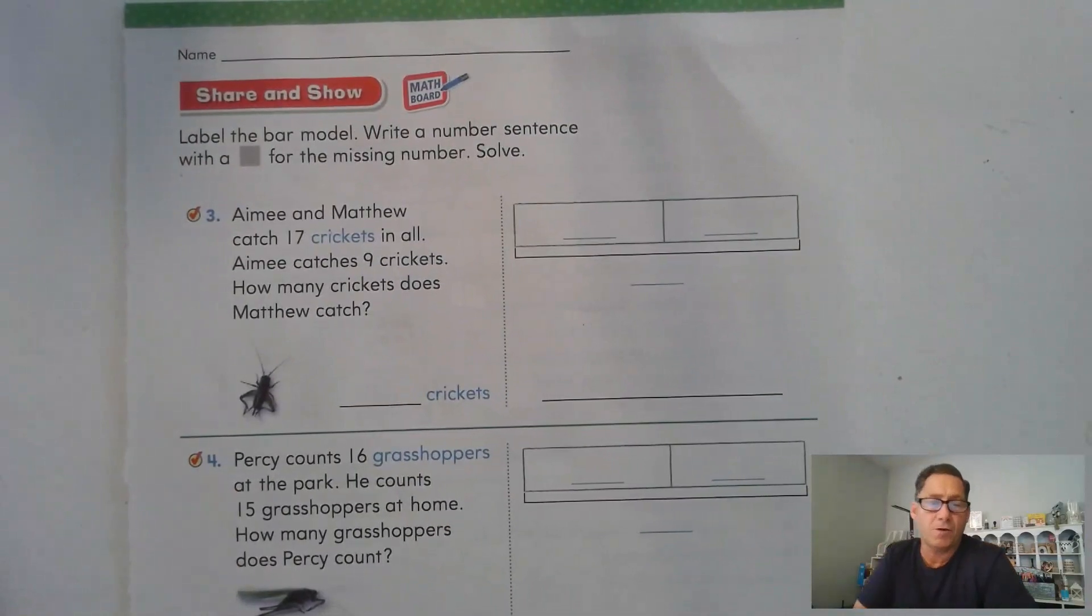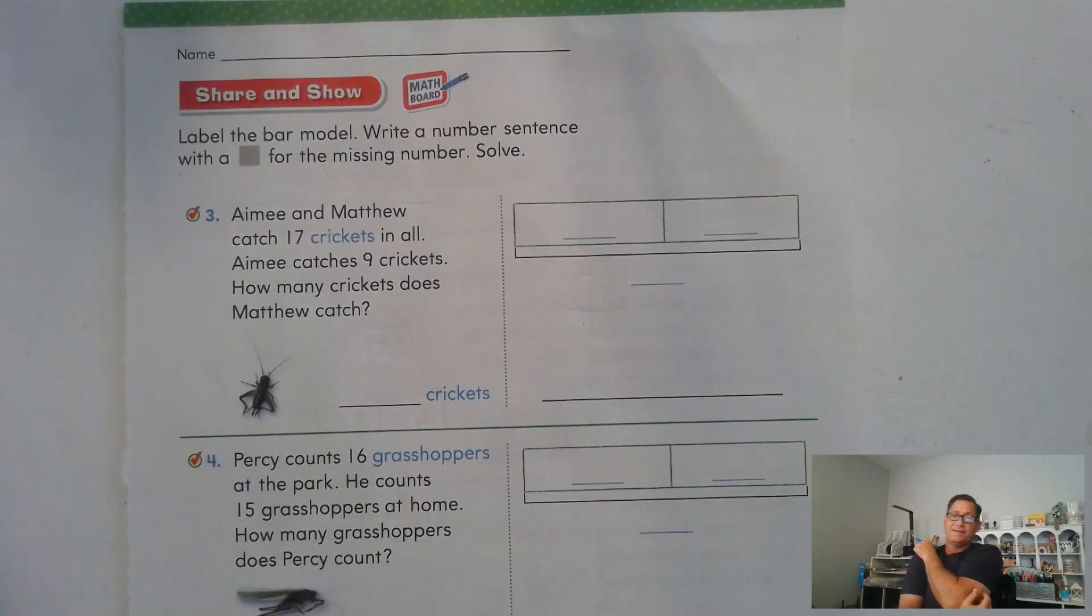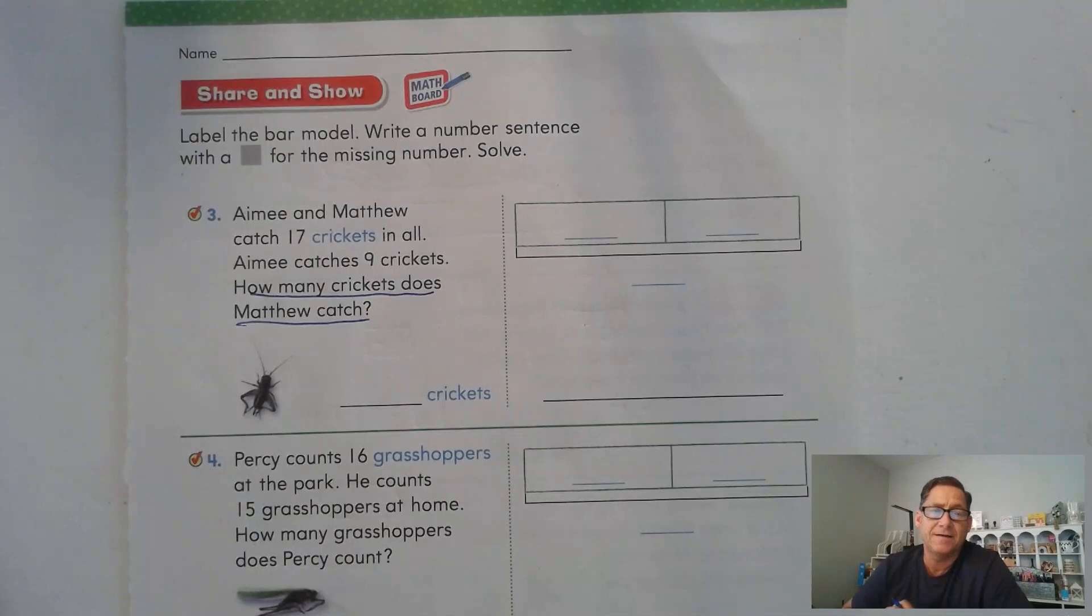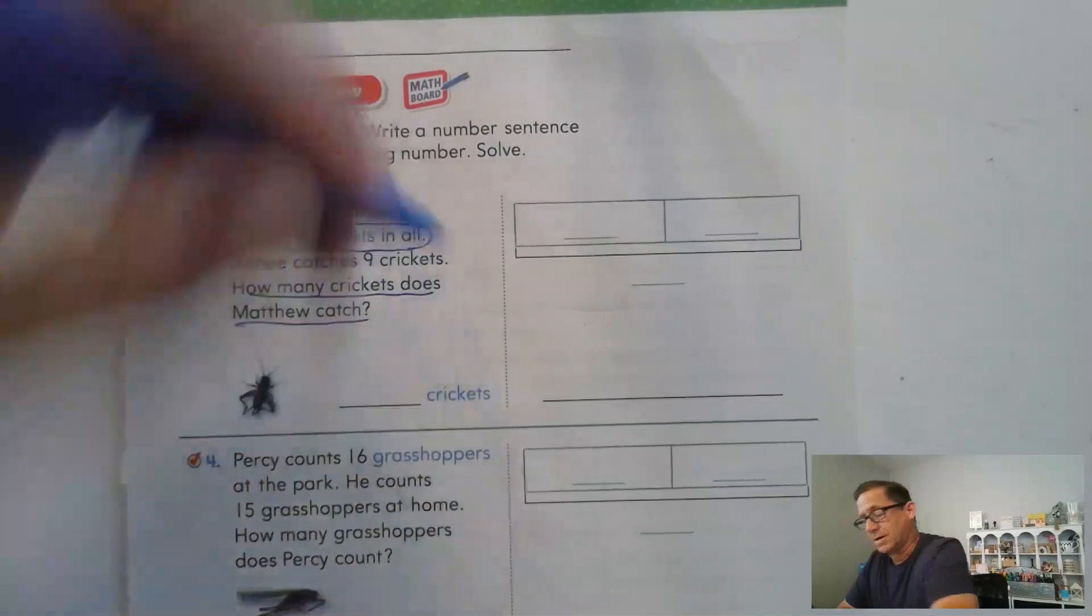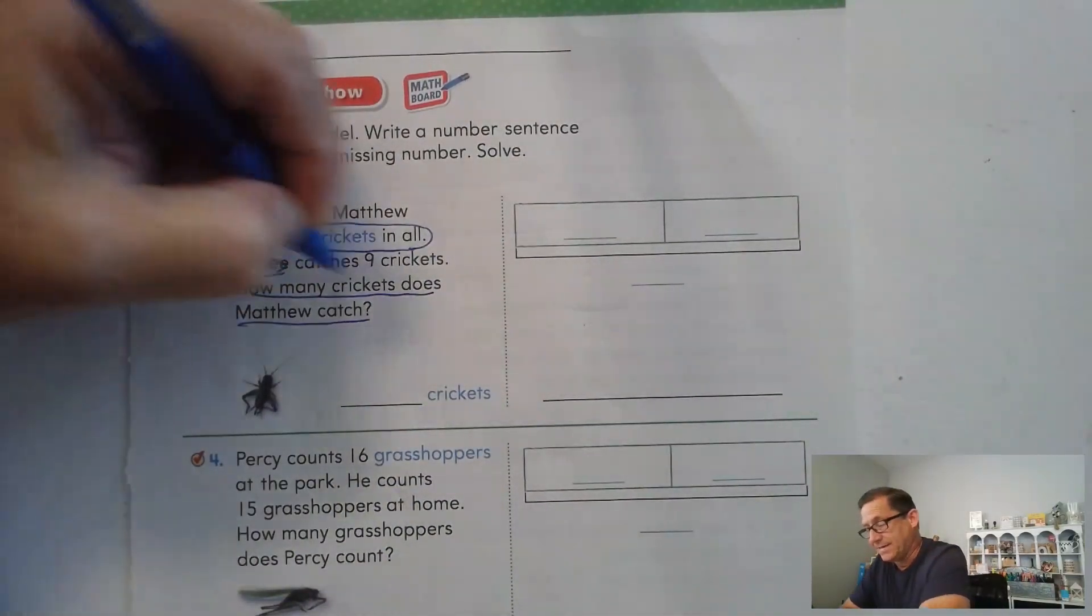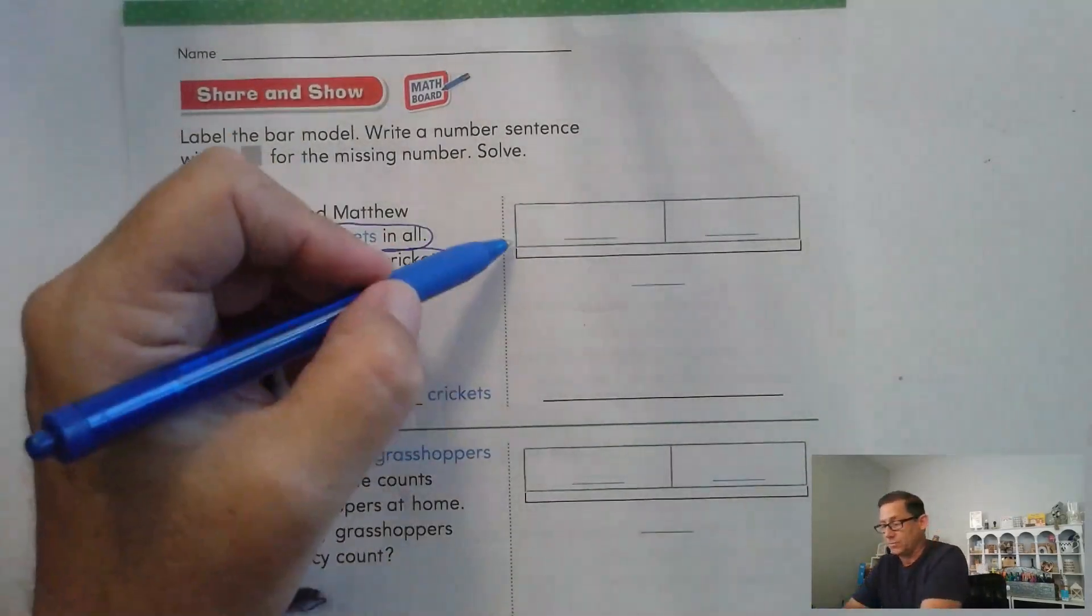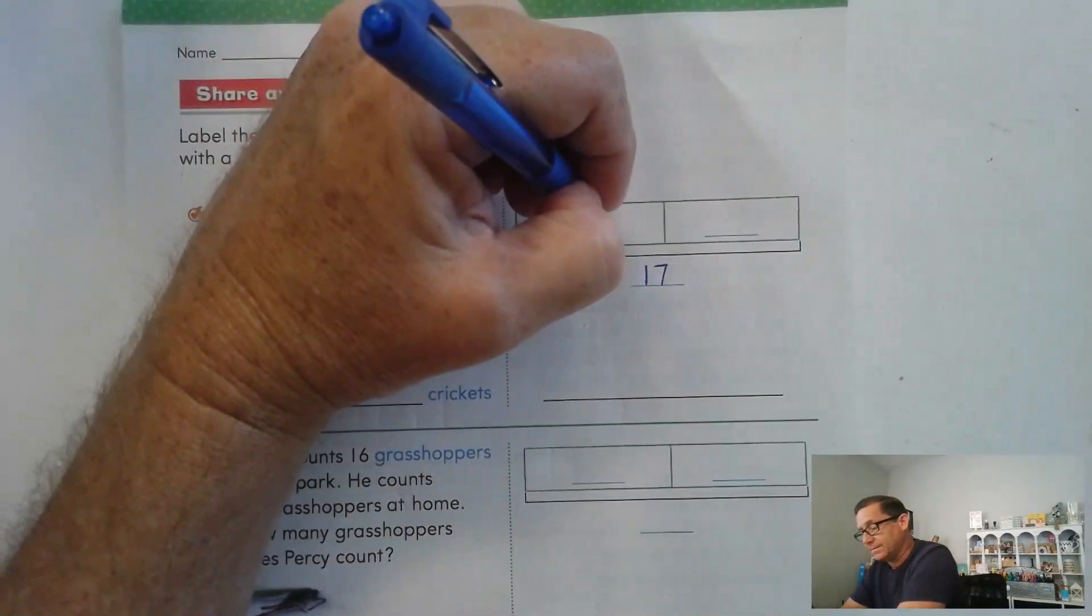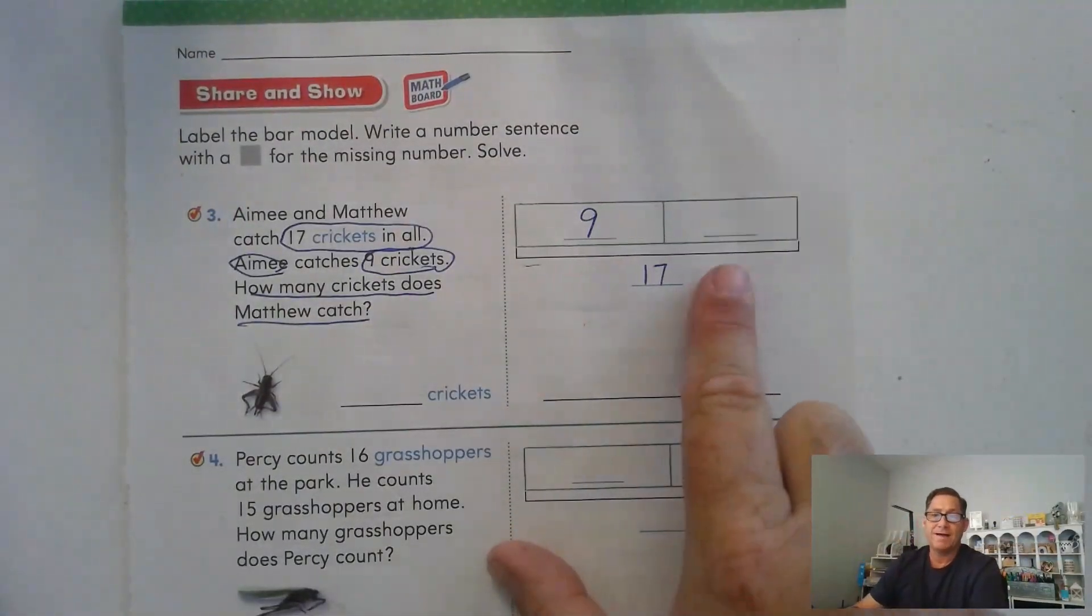Let's look at page 207. Label the bar model and write a number sentence with a square for the missing number and then solve. Amy and Matthew catch 17 crickets in all. Amy catches 9 crickets. How many crickets does Matthew catch? I definitely want to underline what I need to find. I need to find out how many crickets Matthew caught. Now let's go back and circle the important information I know. Together, Amy and Matthew caught 17 together. Amy caught 9 of them. So if we combine these two boxes, we're going to get a total of 17. We know that Amy caught 9 of them. We have to find this one.